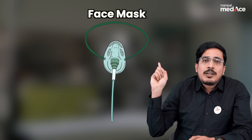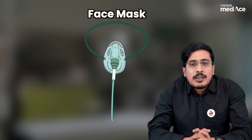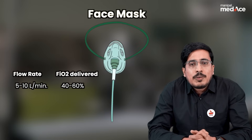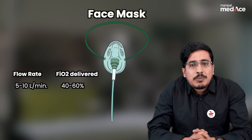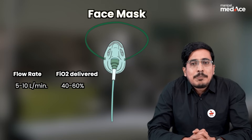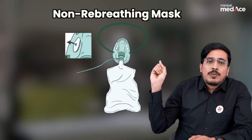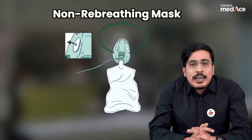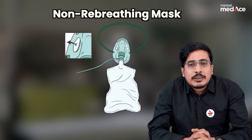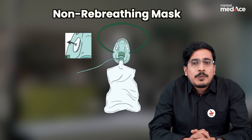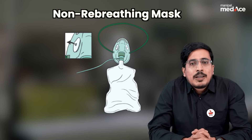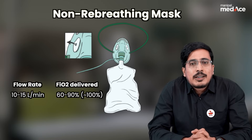The next low flow device is the face mask, also known as the Hudson's mask. Here, the flow rates can be adjusted from 5 to 10 liters per minute, and the maximum FiO2 delivered is 60 percent.